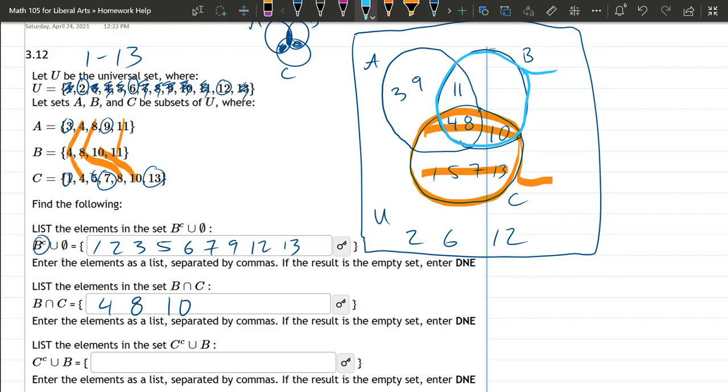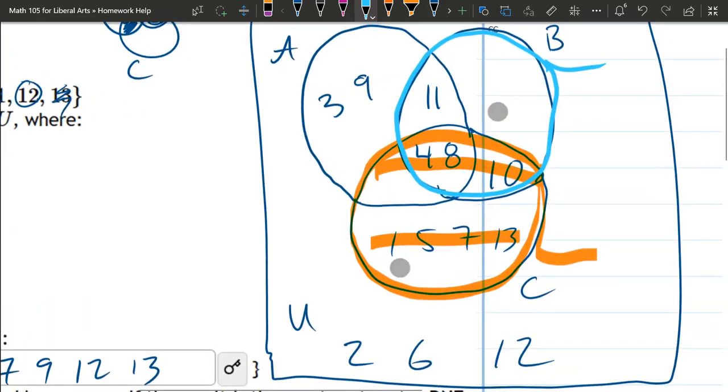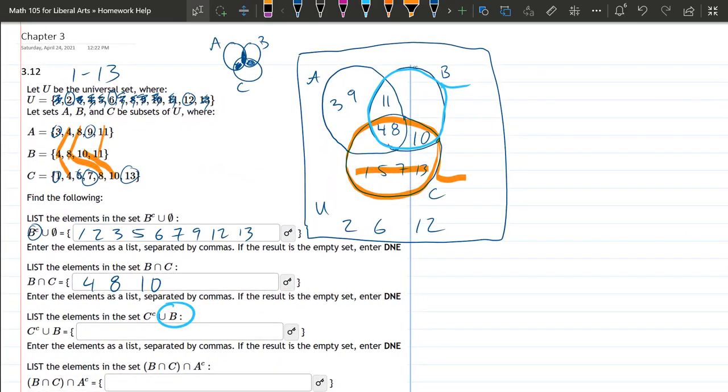However, we want everything outside of C union with what's in B. That's a little bit tricky because there's a lot of things not in C. But 4, 8, and 10 are in C. So normally we would throw those away. However, we're unioning with B. So we're actually going to include 4, 8, and 10 because they're inside B. So the only numbers we're throwing away are 1, 5, 7, and 13, the ones I crossed out in orange. So it's every number that's not 1, 5, 7, and 13. So it's 2, 3, 4, skip 5, 6, skip 7, 8, 9, 10, 11, 12, and skip 13.